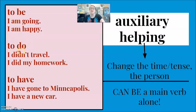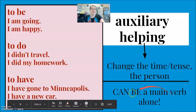We see the same thing with do. I didn't travel. Travel is the main verb. Didn't is the helping verb to show past negative. The second sentence here, I did my homework. Now, did is the main verb alone.